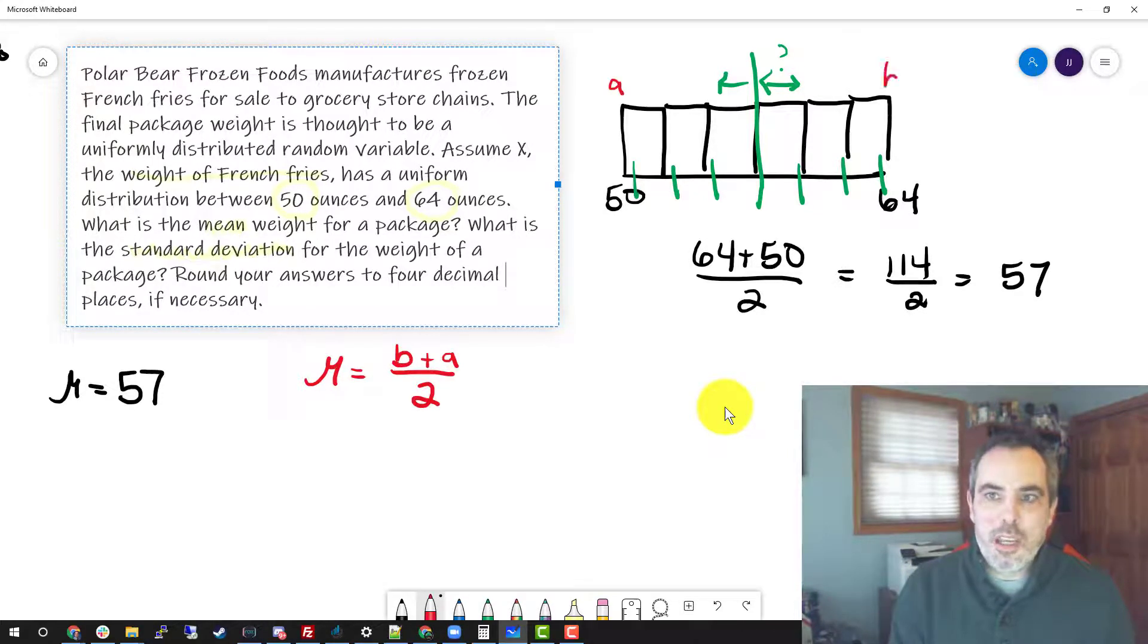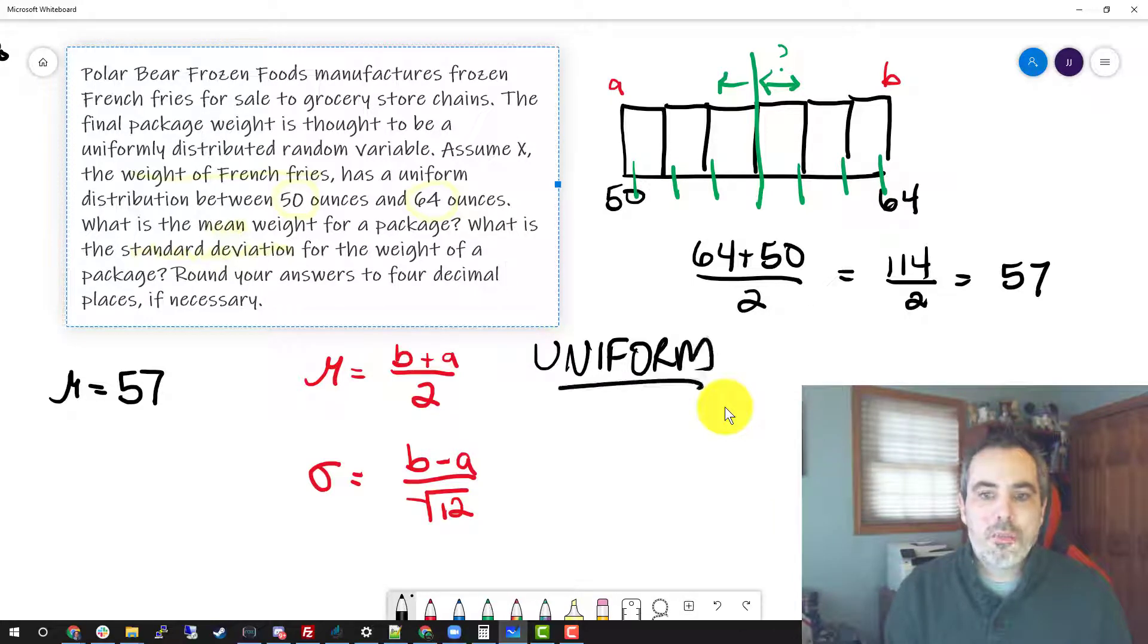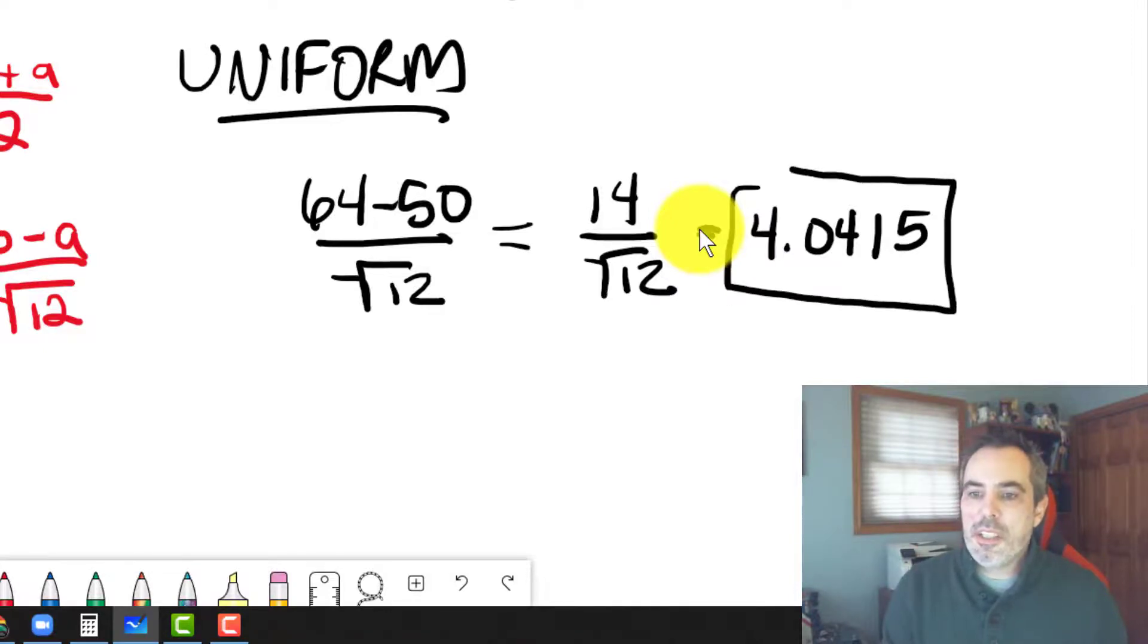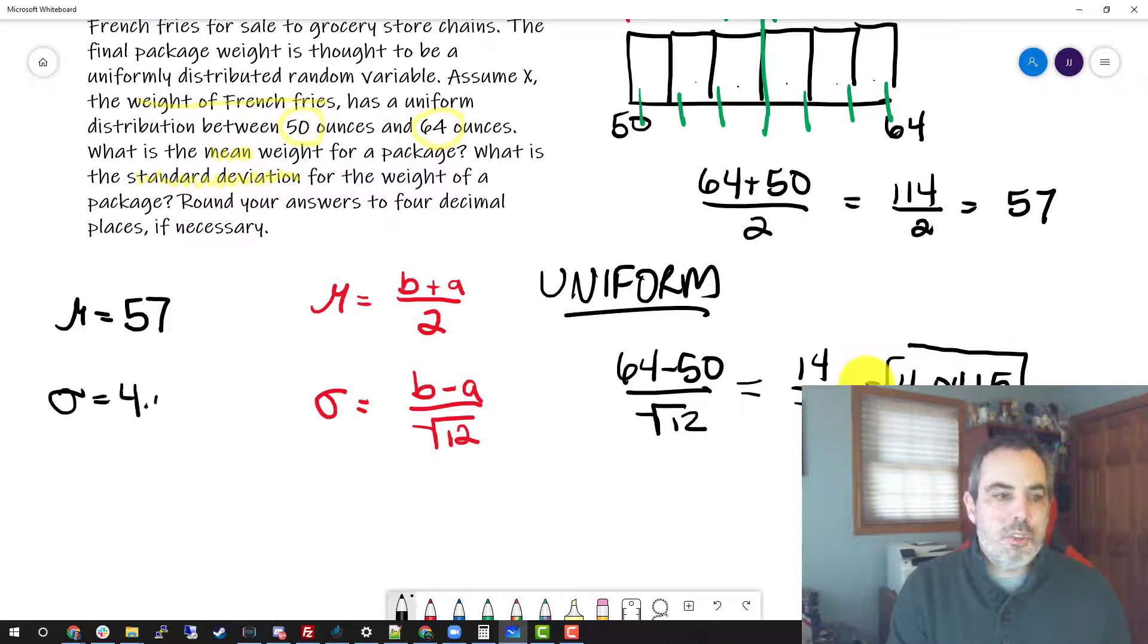The two endpoints were A and B. The standard deviation formula ends up being B minus A divided by the square root of 12. That's where the 12 is derived from. So if I want to find the standard deviation of a uniform distribution, one where it's equally likely for every single weight of that French fry, I'm going to take B minus A, in this case, 64 minus 50, and divide it by the square root of 12. 14 divided by the square root of 12 is 4.0415 if I round that up. So standard deviation is 4.0415.